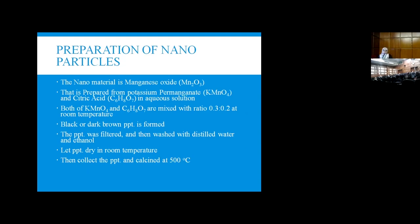The nanomaterial used in this membrane application is magnesium oxide. It's prepared using citric acid with ratio 0.3 to 0.2. The preparation is done at room temperature except for calcination.